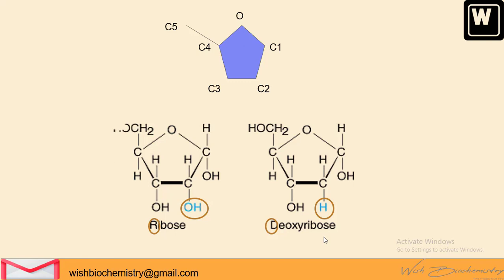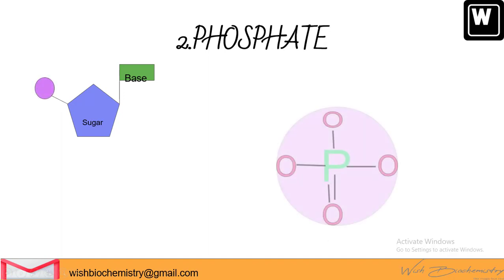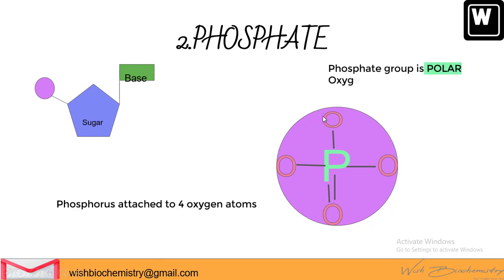Next is the phosphate group. Four oxygen atoms are attached to a centrally present phosphorus atom. The oxygen atoms are negatively charged, making the phosphate a polar molecule and imparting a negative charge to it.